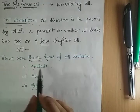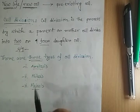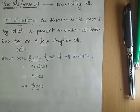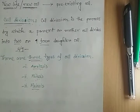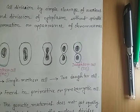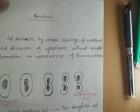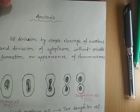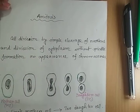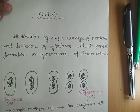There are three types of cell division. Number one: amitosis. Number two: mitosis. And number three: meiosis.